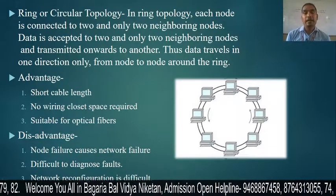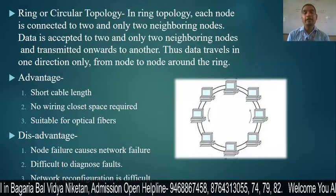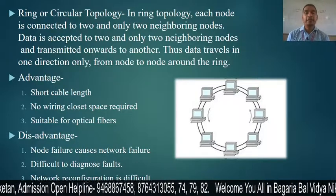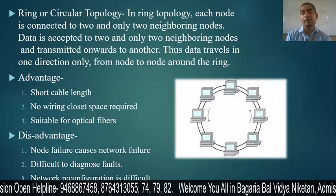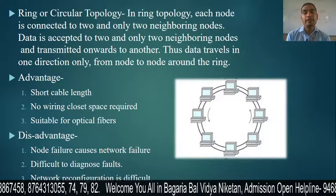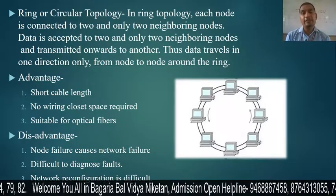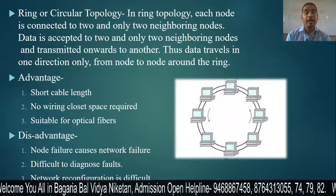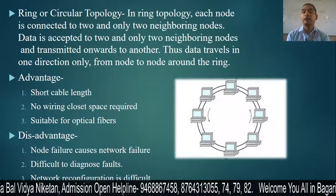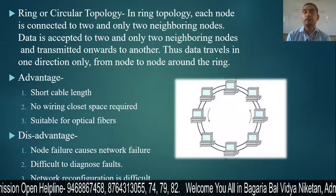The advantages of ring topology are: short cable length — there is less use of cable, and no wiring closet space is required. It is suitable for optical fiber, where data transmission speed is quite high. Every node works as a repeater, so repeater configuration is not required separately because the data is regenerated after each node, keeping the data speed high.